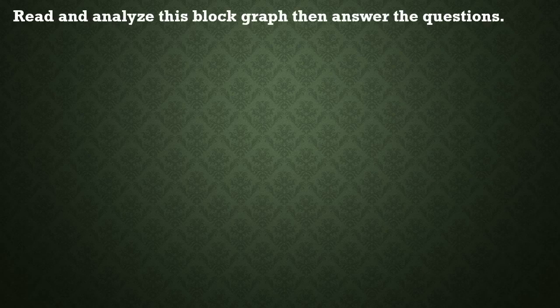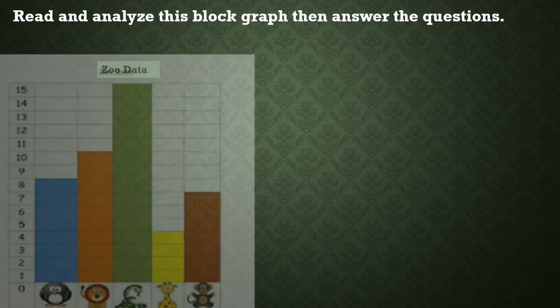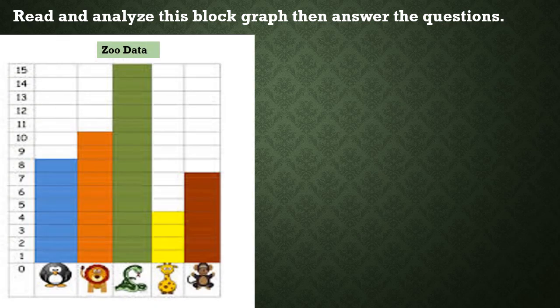Last example. Let us read and analyze the block graph, then answer the questions. This is a zoo data. The animals in the zoo data are penguin, lion, snake, giraffe, and monkey.